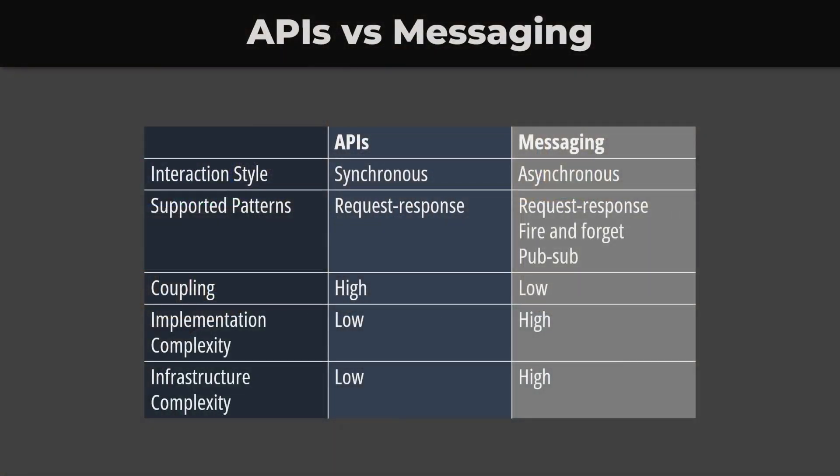Let's summarize what we've learned with some metrics. APIs are synchronous and support the request-response interaction style. They don't require any special infrastructure. They are easy to design and implement, but they lead to tight coupling within the system. Messages are asynchronous and support multiple interaction styles. They lead to low coupling in the system, but require specialized infrastructure. They are also more difficult to implement and monitor.